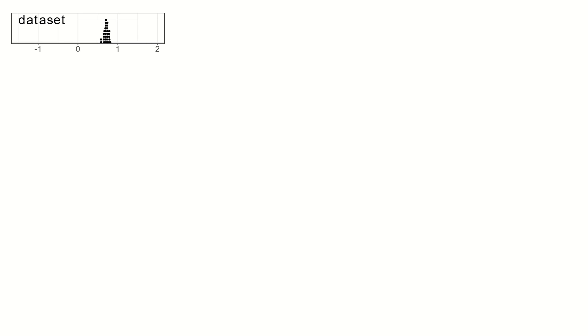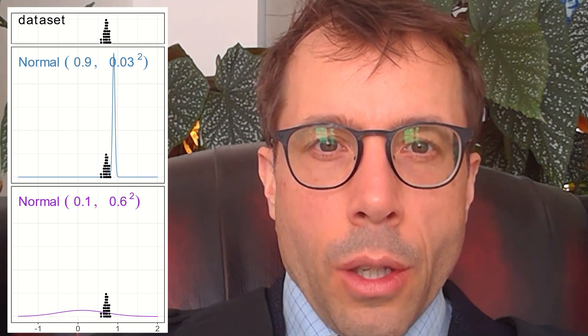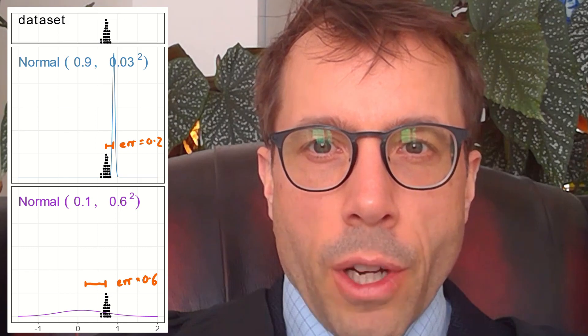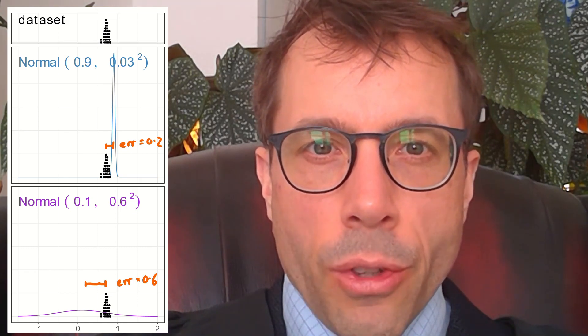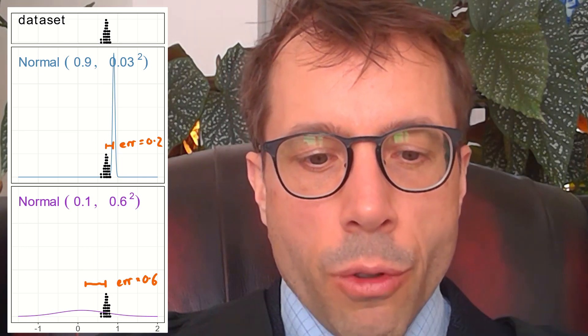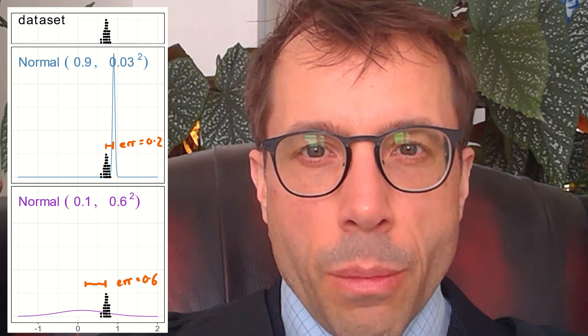Here's a data set of numbers clustered around 0.7. Have a look at these two models for the data set. The blue line in the middle plot shows the probability density function of a normal distribution very close to the data points — just 0.2 units away on average. The purple line in the bottom plot shows another normal distribution with an average error of 0.6. So which of the two is a better model?